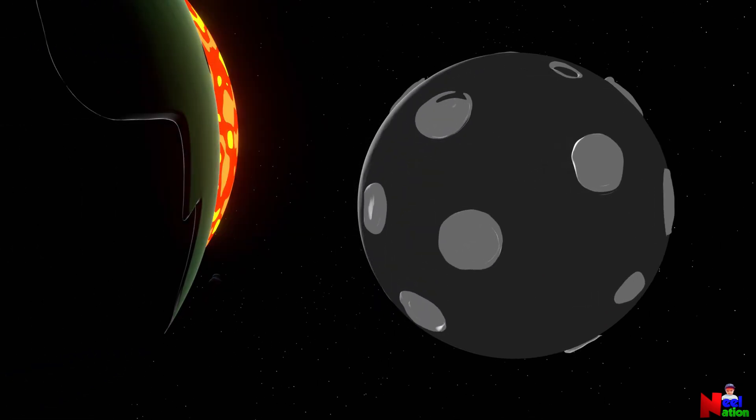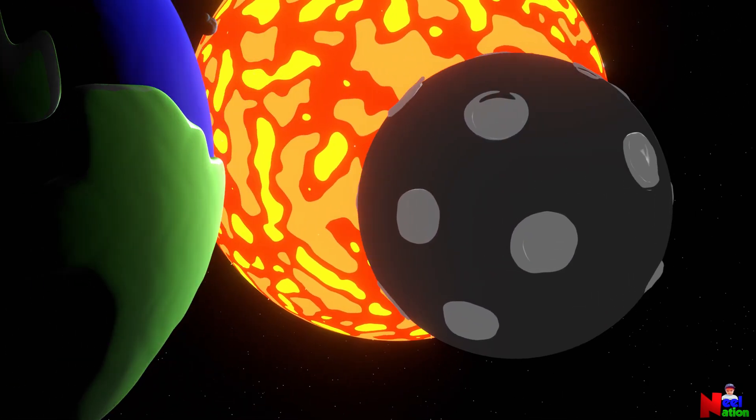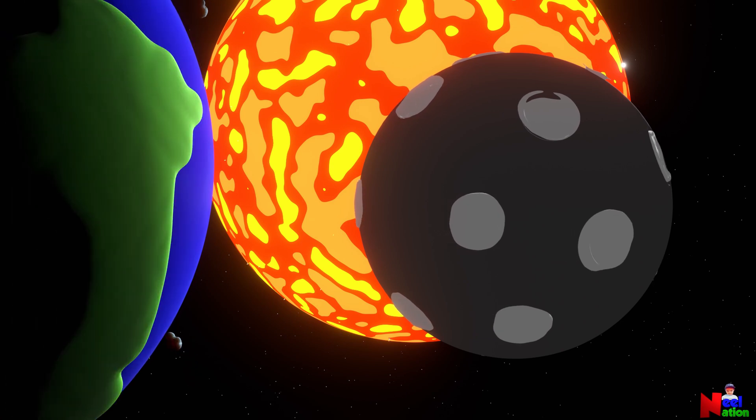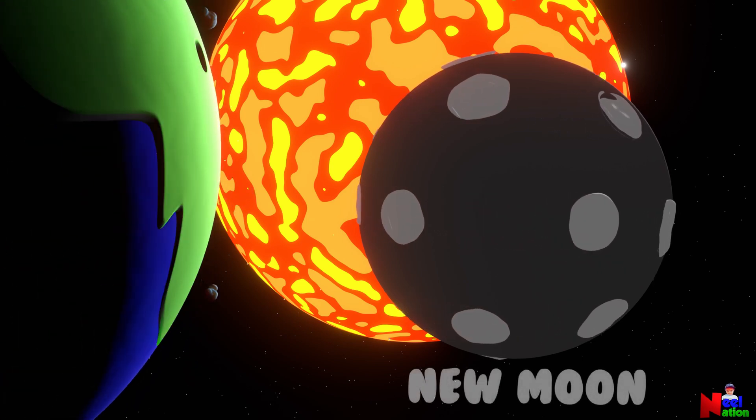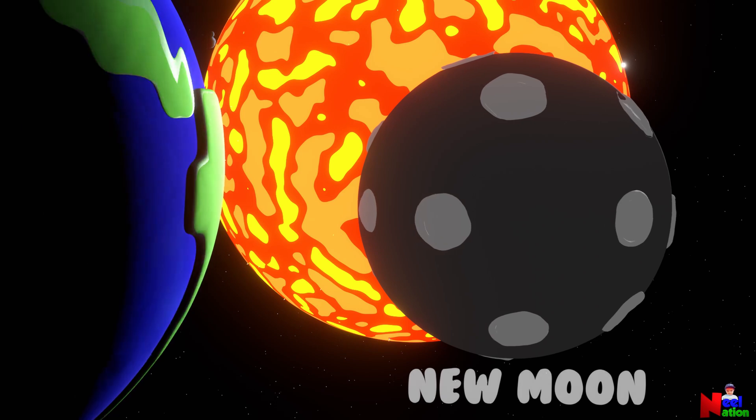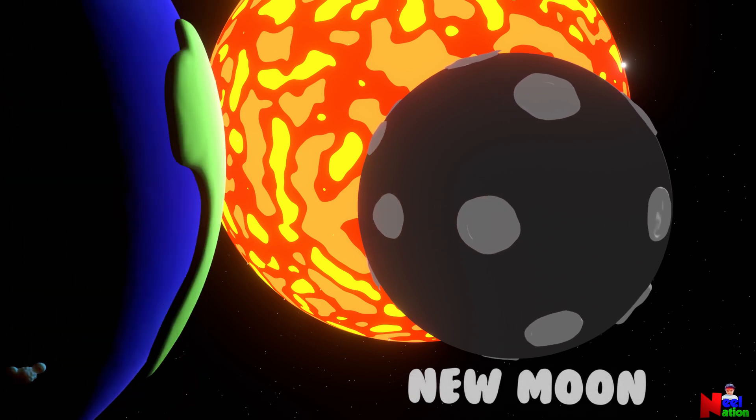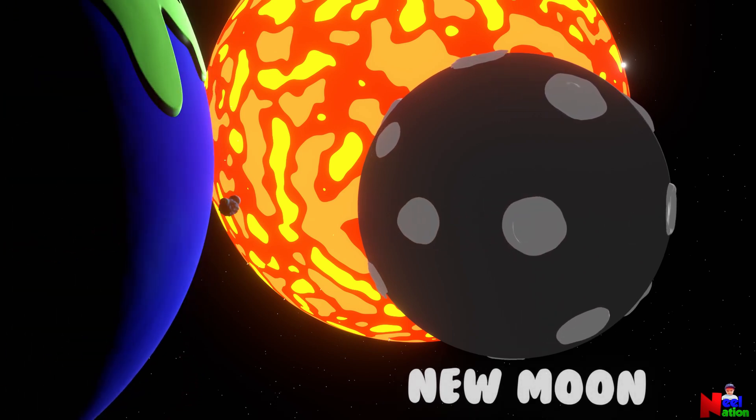Let's look at each phase of the moon in detail. This is the phase where the moon is not visible to us from Earth. This is called the new moon. In this phase, the lit up side is facing the sun and the dark side is facing the Earth.